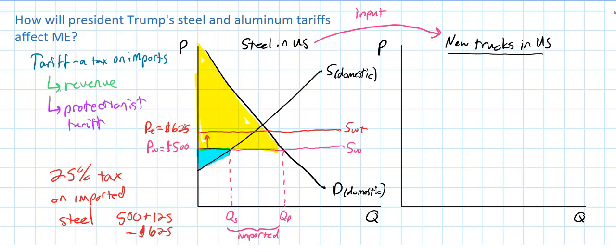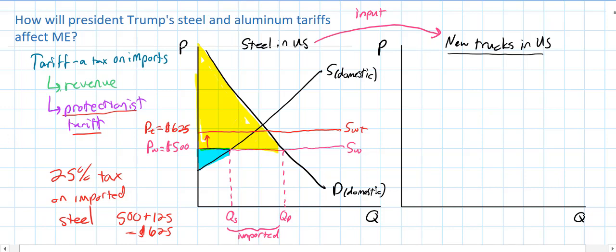Now we can analyze how these proposed tariffs would affect different stakeholders. Domestic steel producers are meant to benefit — U.S. producers of steel should be better off as a result of this 25% tariff. The higher price leads to an increase in the quantity supplied to QS1. However, all the companies in the United States that depend on steel are going to be made worse off. The higher price causes quantity demanded by auto manufacturers, airplane manufacturers, bicycle manufacturers — all industries that depend on steel — to fall to QD1. Imports will be smaller as well.